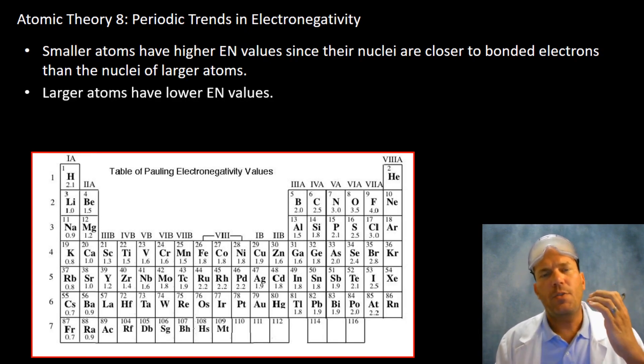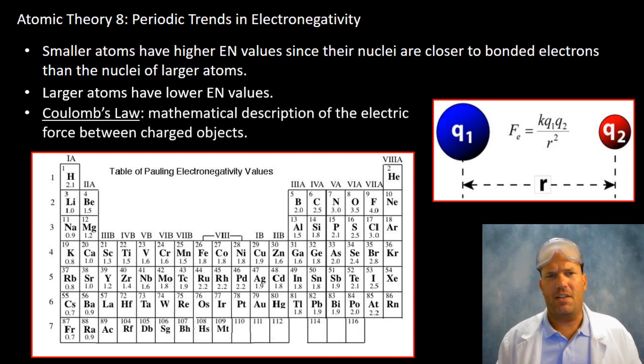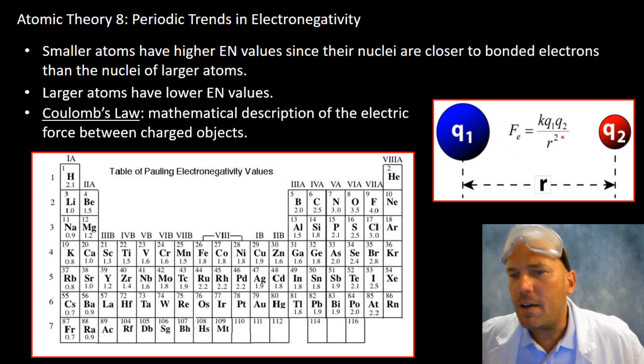Now, you've heard me throw out the term Coulombic attraction. It's time to get a definition. Coulomb's law is a mathematical description that was discovered by a French physicist, Charles-Augustin de Coulomb. And he found this mathematical relationship, which comes up over and over again in science: the inverse squared relationship.